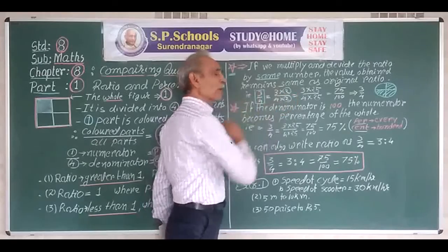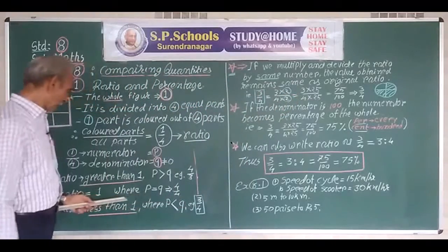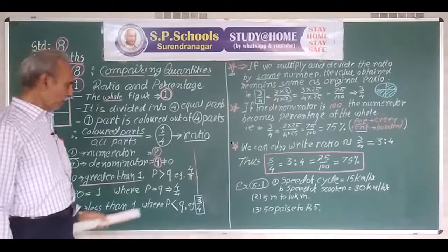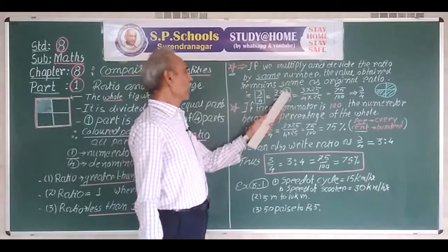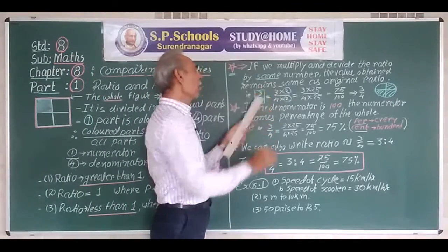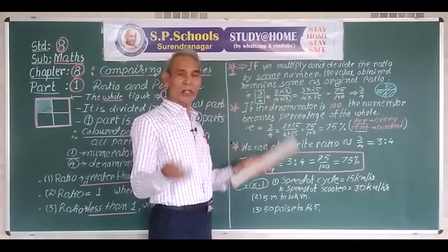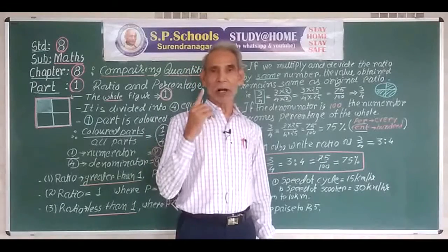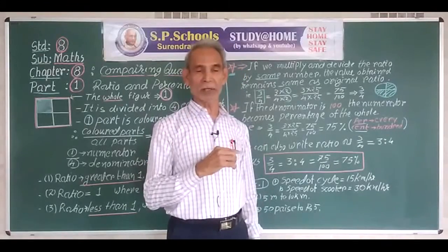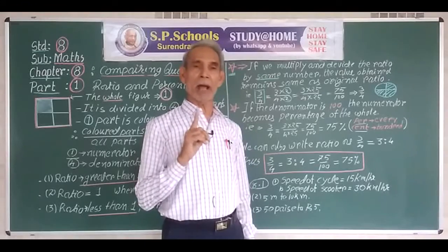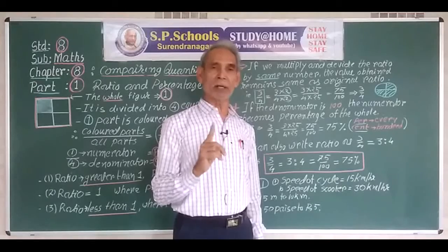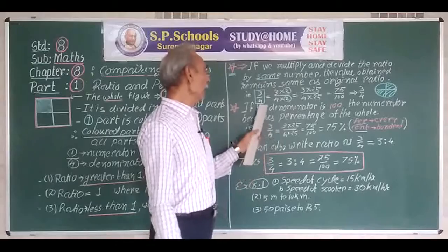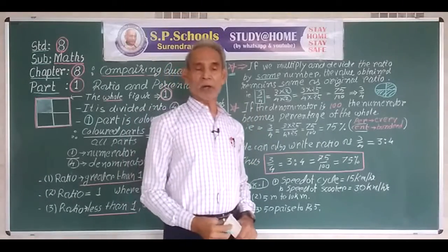This also means multiplying by two upon two — which is a ratio with value one when numerator equals denominator. So actually, we are multiplying by one. Three upon four multiplied by one is three upon four. Because one is the identity element of multiplication — if you multiply any number by one, the value of the product remains the same as the original value.